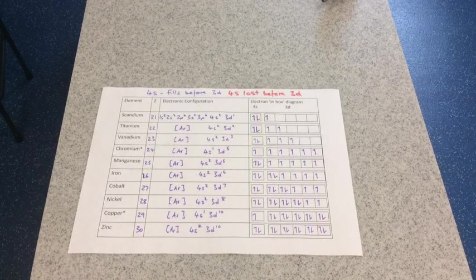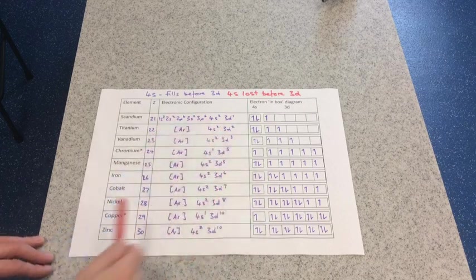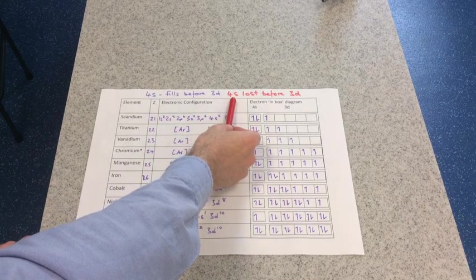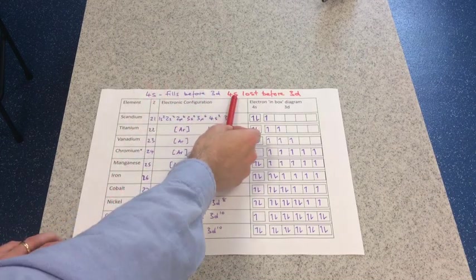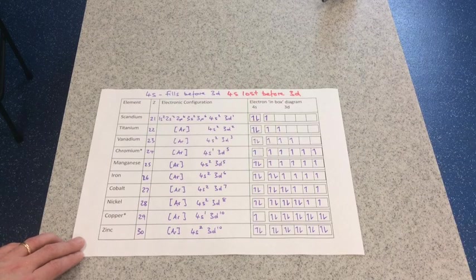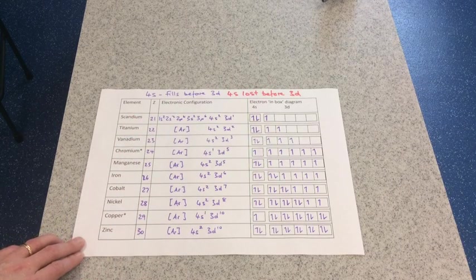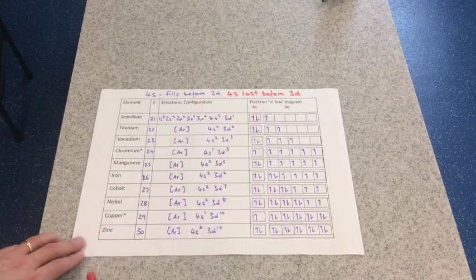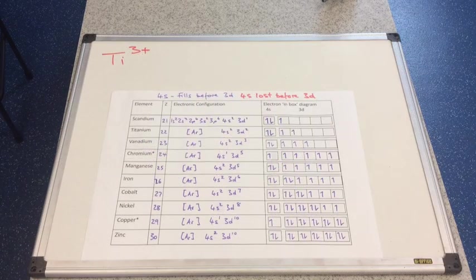So if we come on to the ions of the transition elements now, or the ions of the 3d elements, then you can see I've added an extra statement here. After 4s fills before 3d, 4s is also lost before 3d. So when these elements form positive ions, they only ever form positive ions, they are going to lose electrons. And it's the 4s electrons that are lost before the 3d electrons.